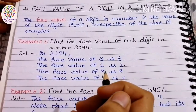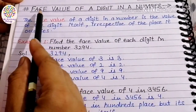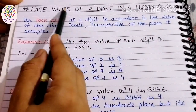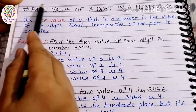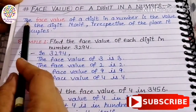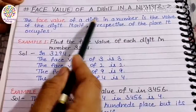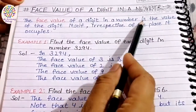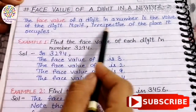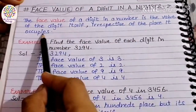Hello kids, welcome back to Kids Learning Galaxy YouTube channel. Today we will learn about the face value of a digit in a number. The face value of a digit in a number is the value of the digit itself, irrespective of the place it occupies.